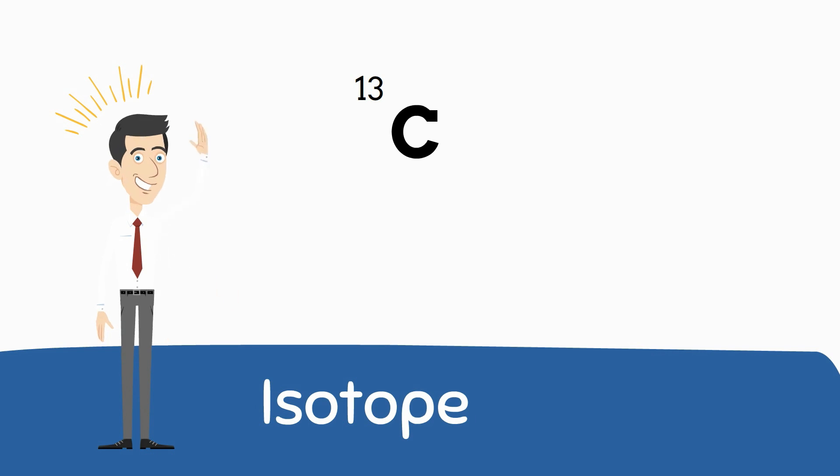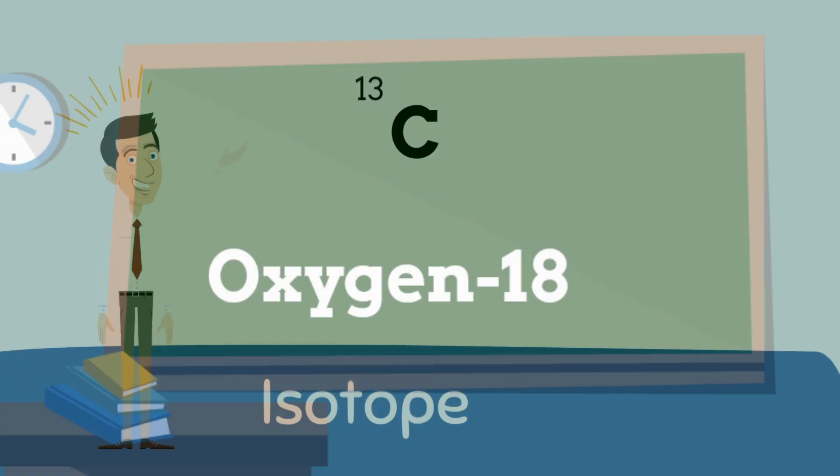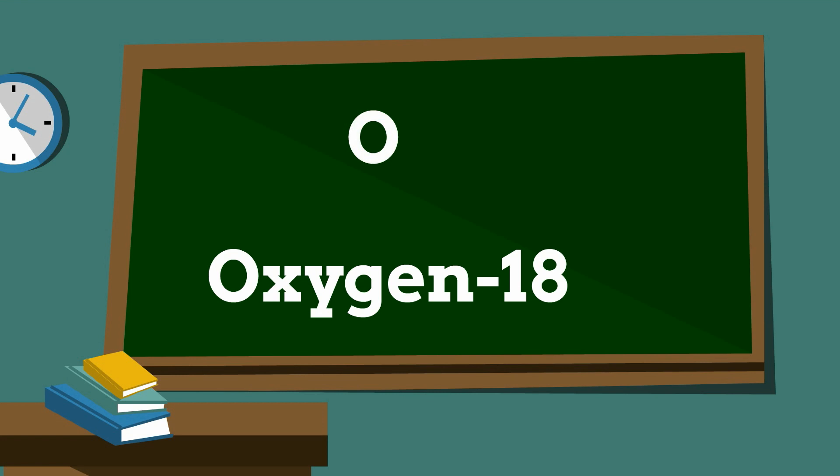Let's look at some examples. The isotope of oxygen has 8 protons and 10 neutrons.